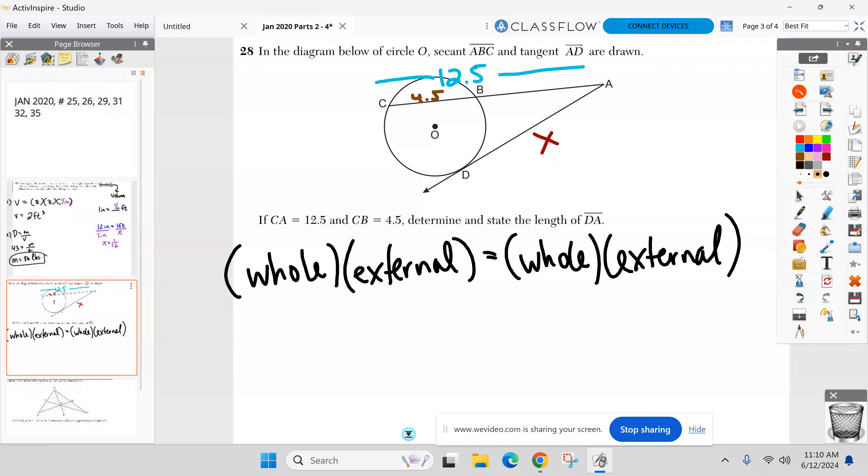So let's go whole secant is 12.5. And here's the only trap you may fall into, right? External is not 4.5. That's inside. I want the outside part. So everyone does a quick subtraction of 12.5 and 4.5 and finds the external part is 8. So whole times external. And then what do we know about the tangent over here? The whole thing is on the outside. So we call it the same thing. We use the same value.